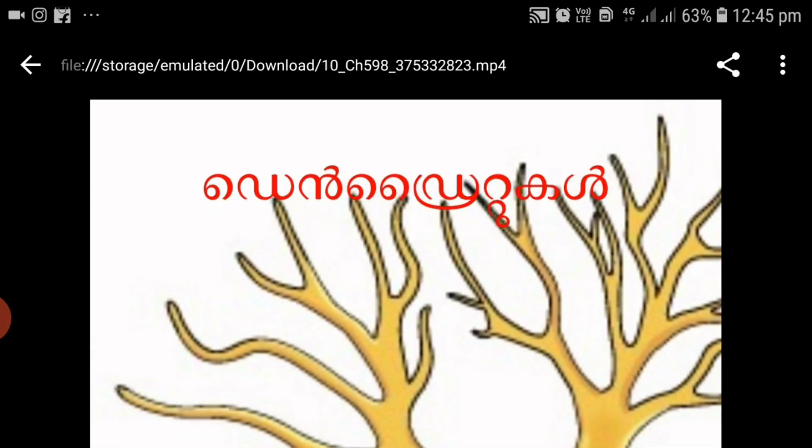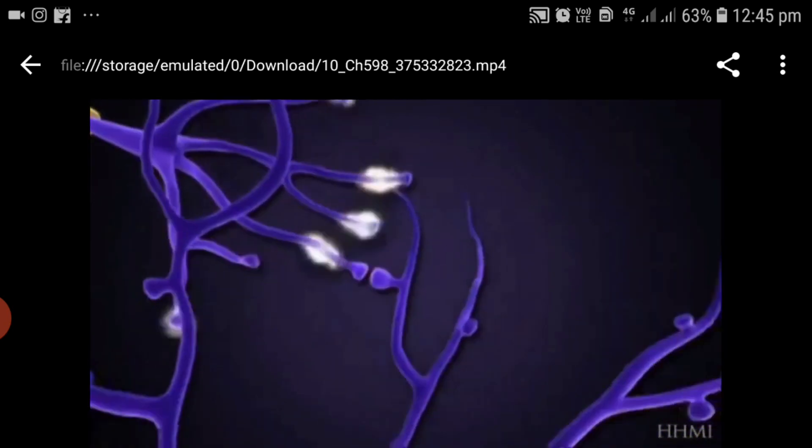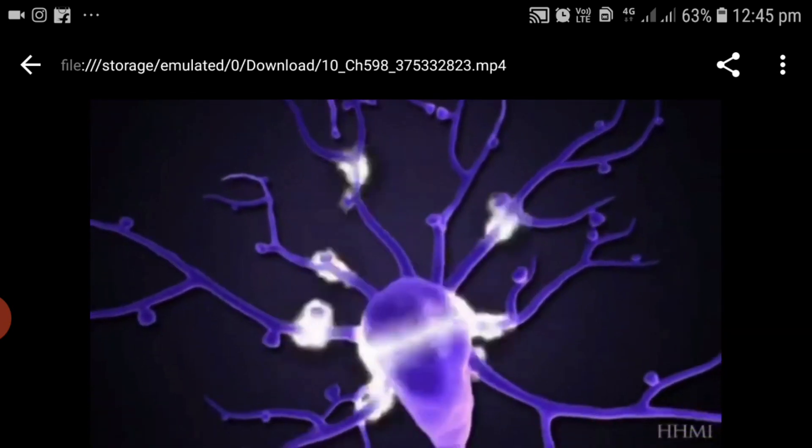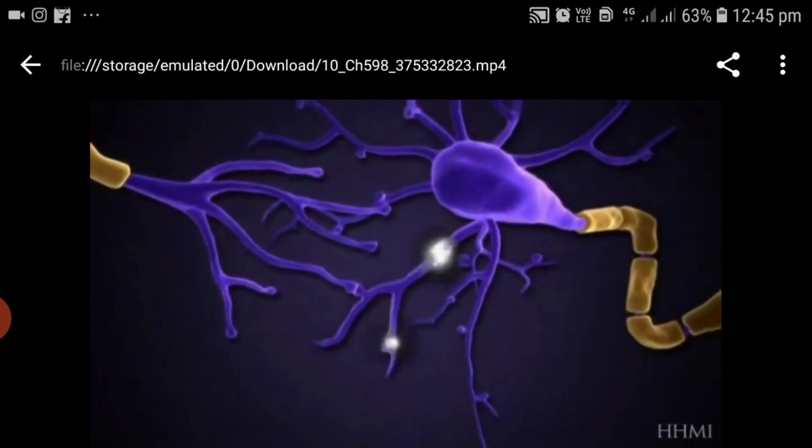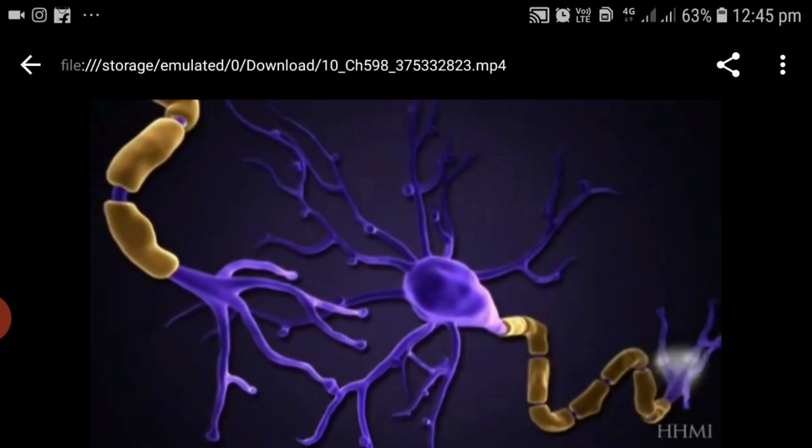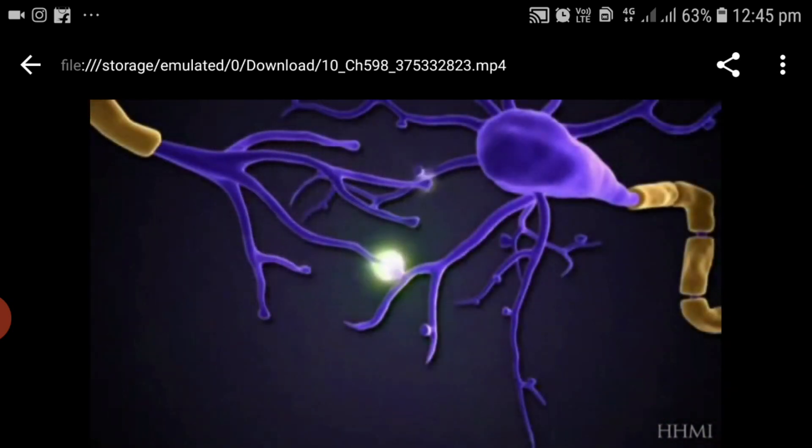Now let's see what is the function of dendrons and dendrites. Dendrons are spread around the cell body, so it is very clear that it is the part that receives stimulus or impulse from the adjacent neurons or from the environment. They pass the impulses from dendrites to the cell body.